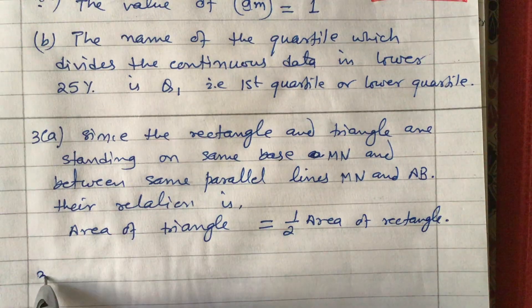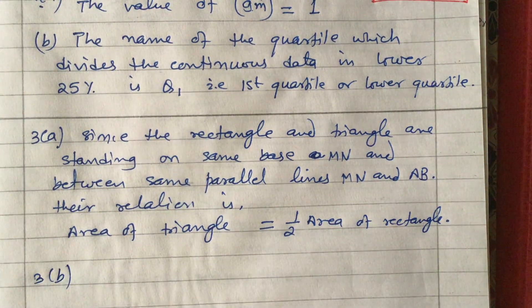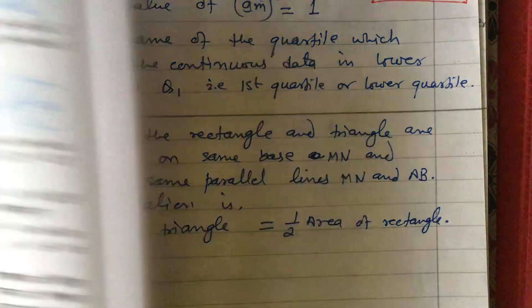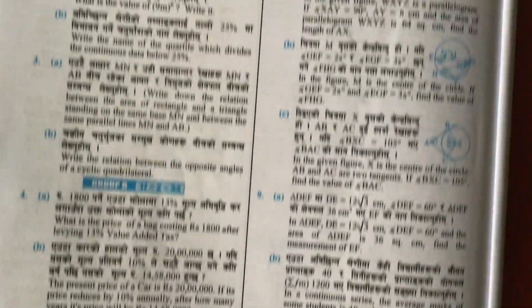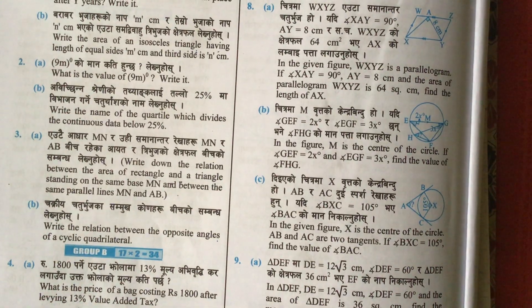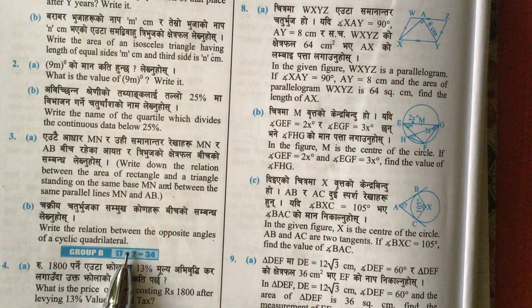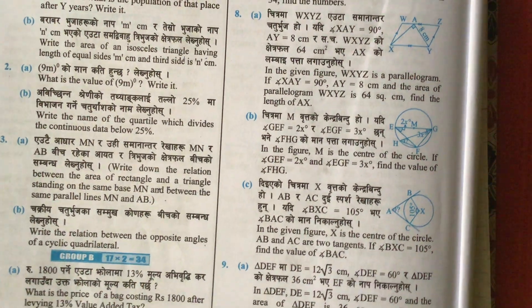Okay, now question number 3b. Let's answer number 3b. The question is: write the relation between the opposite angles of a cyclic quadrilateral.